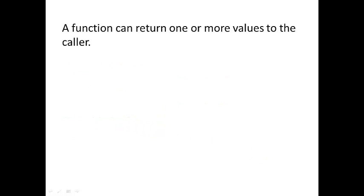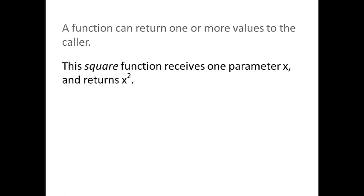A function can return one or more values to the caller. This square function receives one parameter, x, and it returns x squared. So the square function, all it does is square an integer.